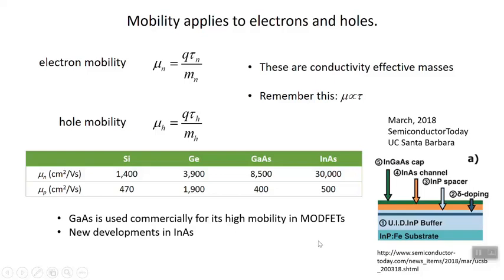So that's an introduction to those important concepts of mobility, drift speed, and mean relaxation time. When we come back, we will talk about current density.